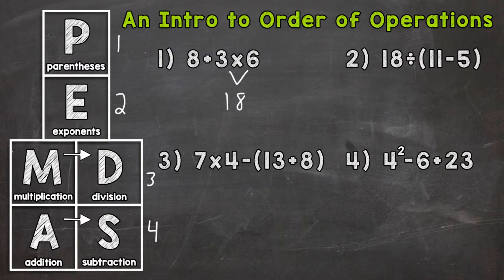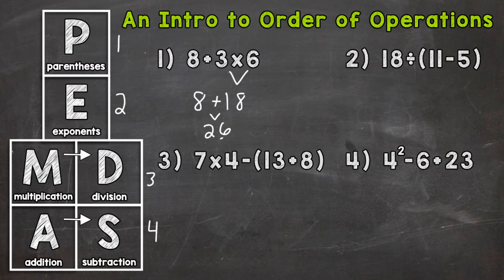I need to bring down everything I did not use because I am not done yet. I did not use my addition sign and I did not use the eight. Now we only have addition, so that's the only thing we can do, and that's where we end this problem. Eight plus 18 equals 26, and that is our final answer.